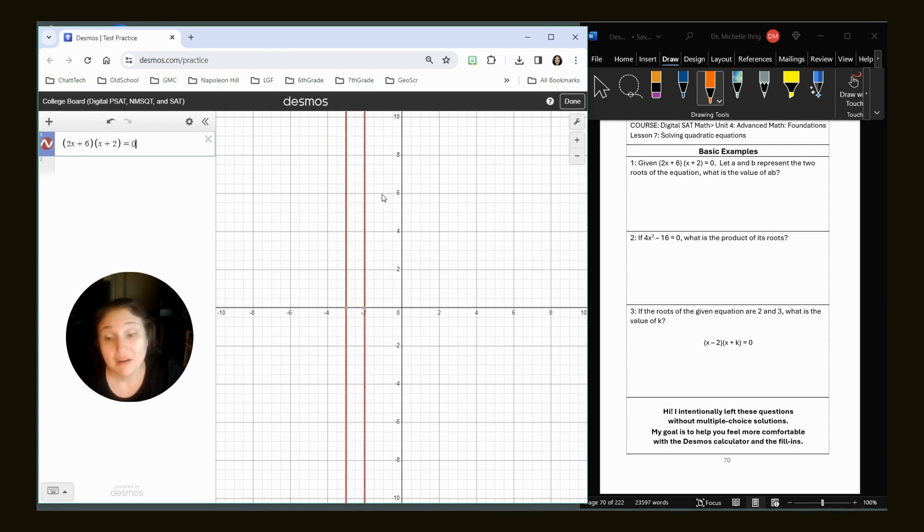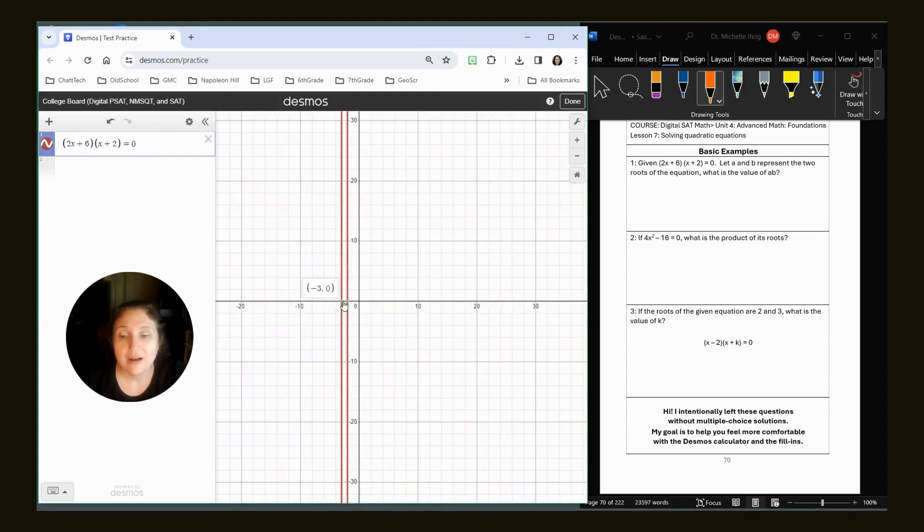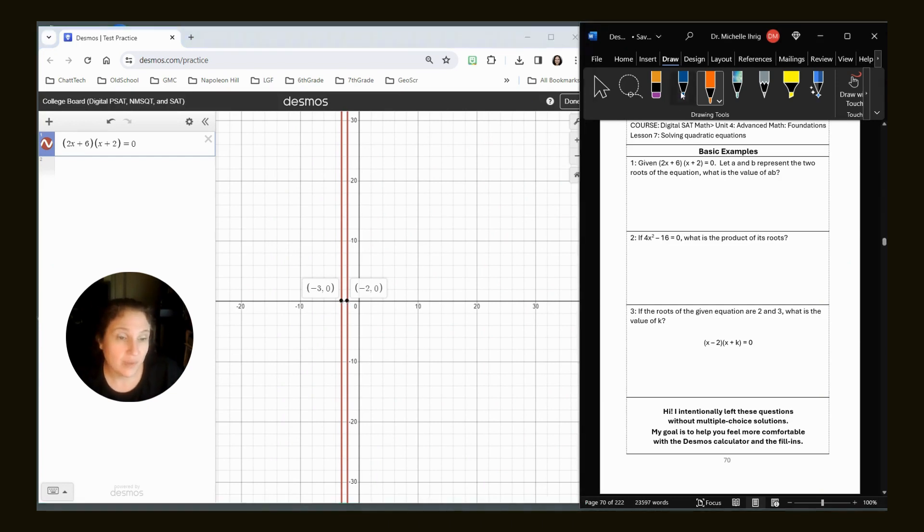So we've got 2X plus 6 times X plus 2, and I am going to type in equals zero. And oh, it actually did more than I thought. Okay. So whether you type it, if you type it equals zero, it's going to actually give you two lines instead, which is fine because those are the numbers we want. We want negative three and negative two as our roots.